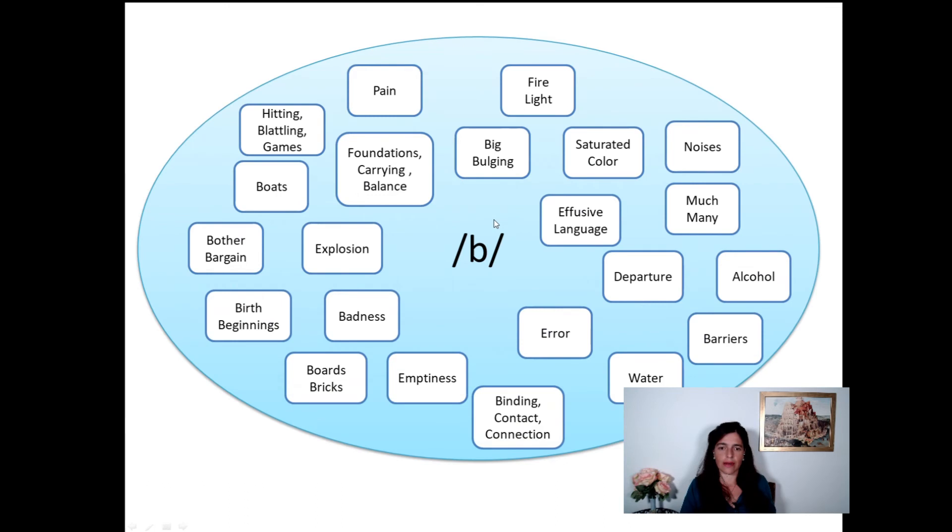That you end up with something that looks like this. For the sound B, she grouped words. Every word that had, that didn't have prefixes and suffixes, just the main core of the word, without roots, without affixes, if you want, she grouped them. And she said, okay, some of them have to do with explosions, some of them have to do with badness. What's the quality that these words share in common, right? And she ended up with this kind of grouping, where all the words that start with B will have one of these characteristics.